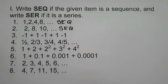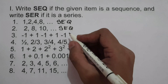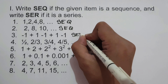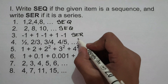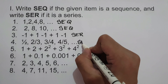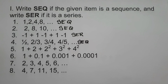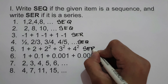Number 3: −1 + 1 − 1 + 1 − 1. It is separated by plus and minus signs, so we can say this is an example of a series — SER. Number 4: 1/2, 2/3, 3/4, 4/5. This is a sequence — SEQ. Number 5: 1 + 2 + 2² + 3² + 4². This is a series — SER.